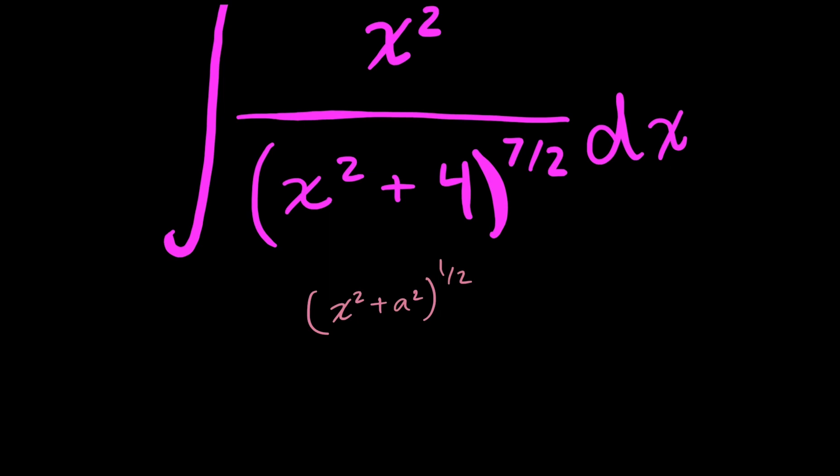In our case, it's going to be a tan substitution because I have a plus. So I'm going to set x is equal to a tan theta, and in my case, a is going to be equal to 2 because I have a squared is equal to 4.